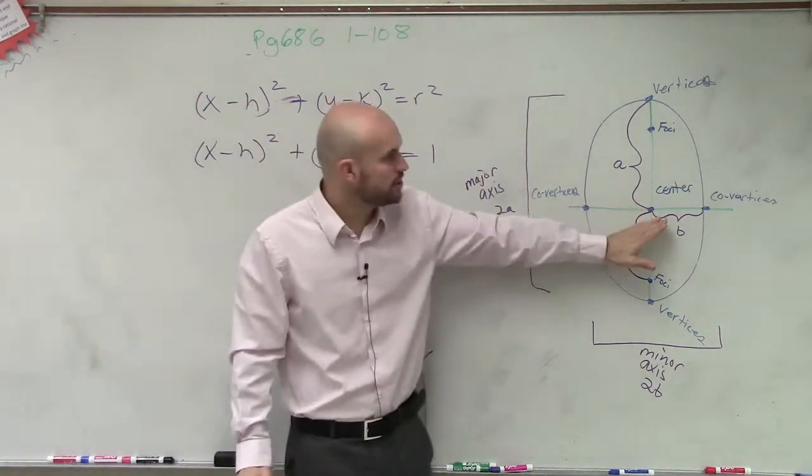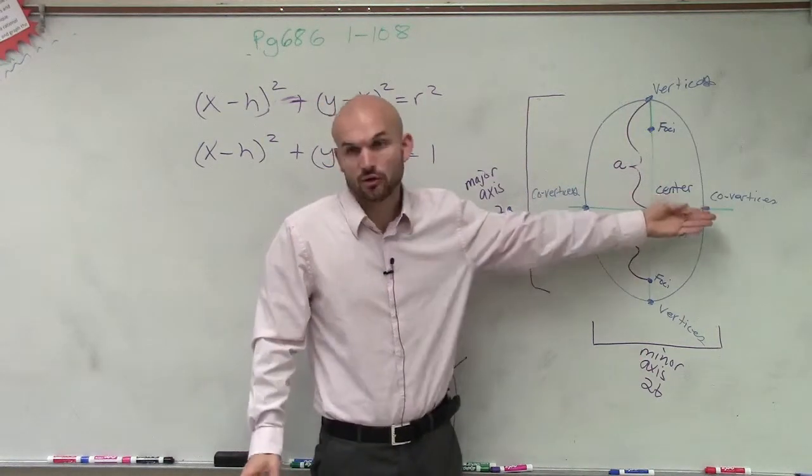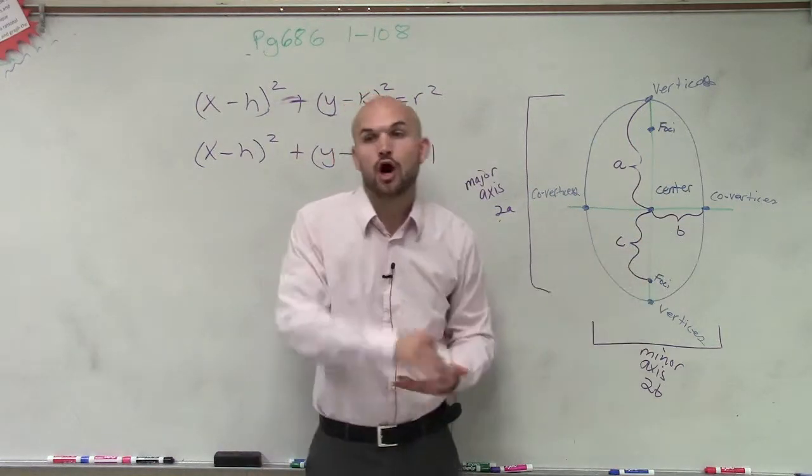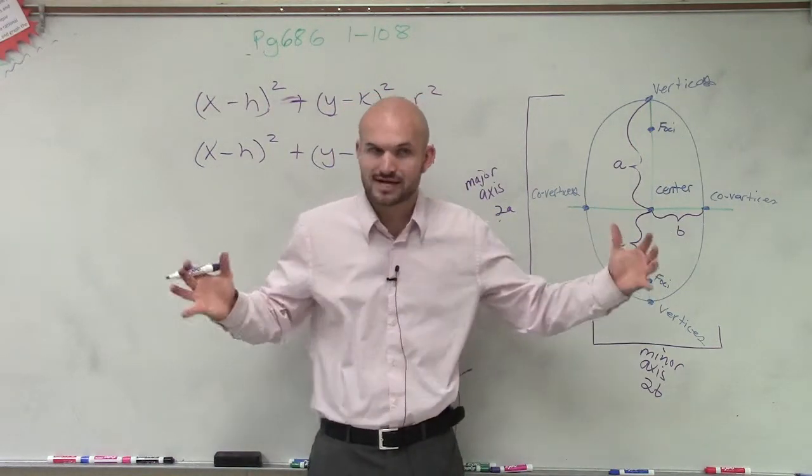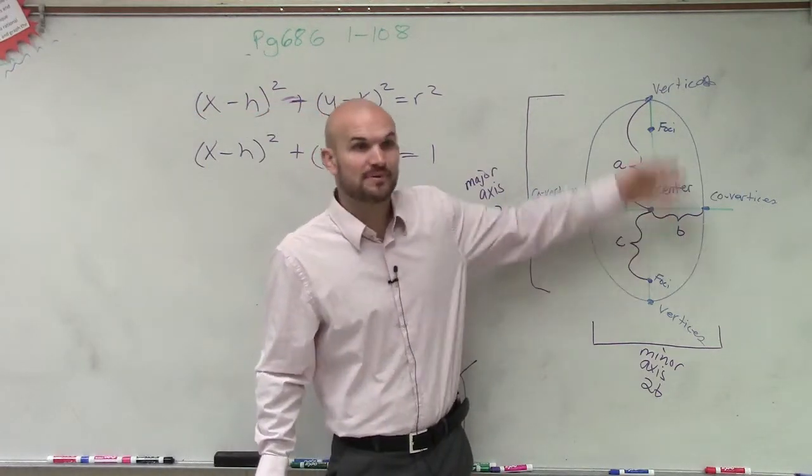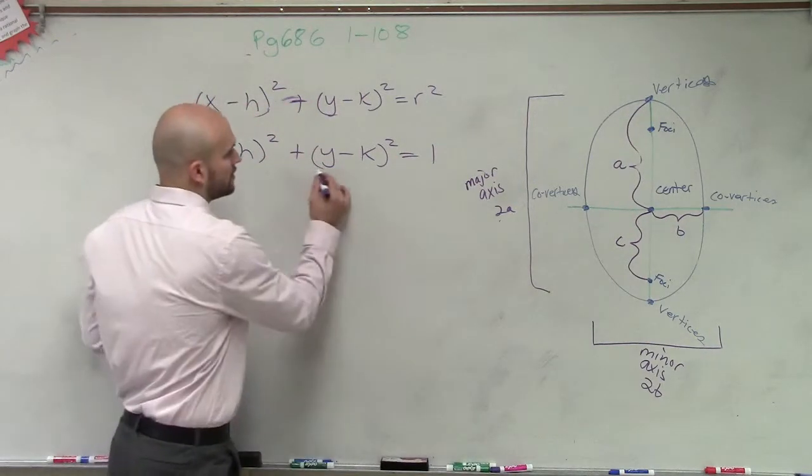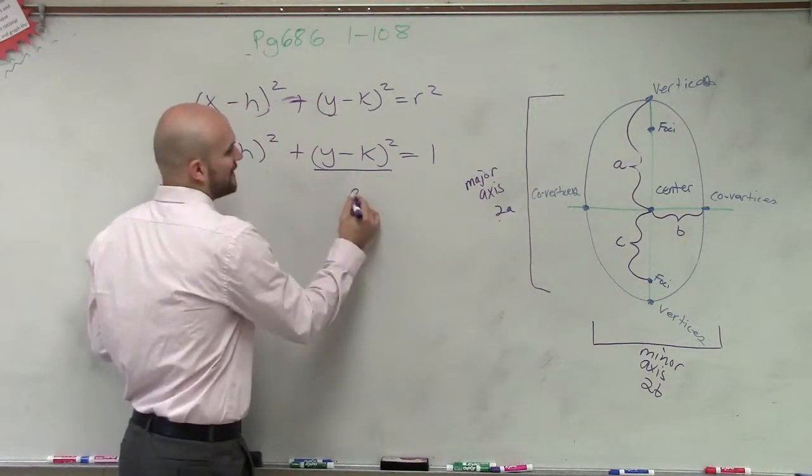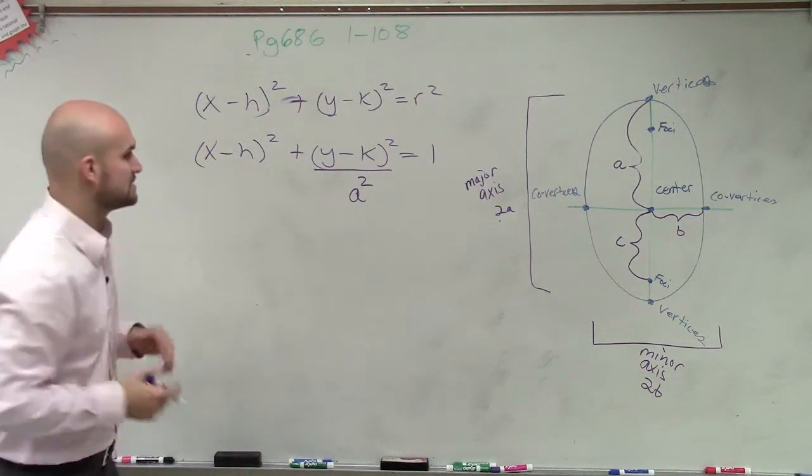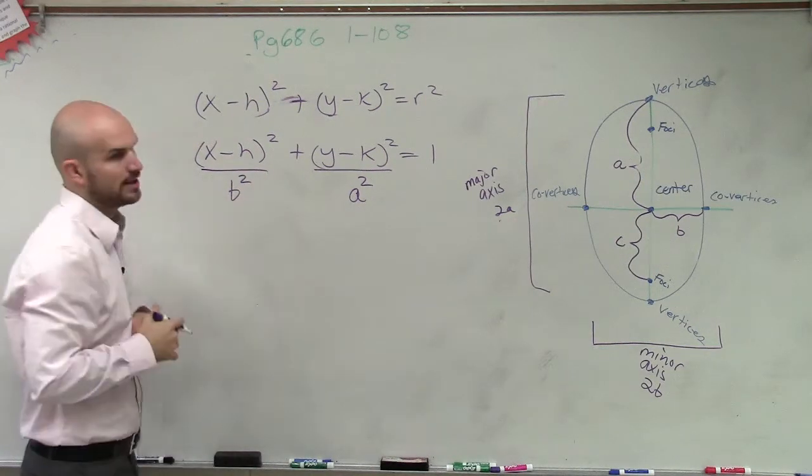when we have a vertical, we know that the vertical axis is larger than the horizontal axis. So this ellipse is longer vertically than it is horizontally. Therefore, remember, our a represents our major axis. So since our major axis is longer vertically, we're going to have a squared over this and then b squared over here.